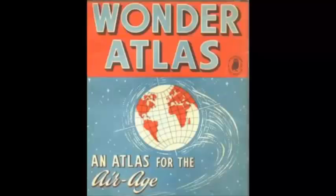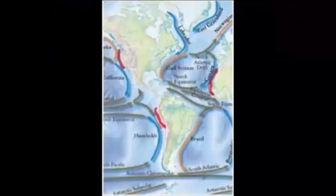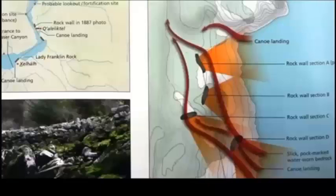The Map Library also has hundreds of atlases, from Atlas of Urban Expansion, to Atlas of Coasts and Oceans, to the Stolo Coast Salish Historical Atlas.